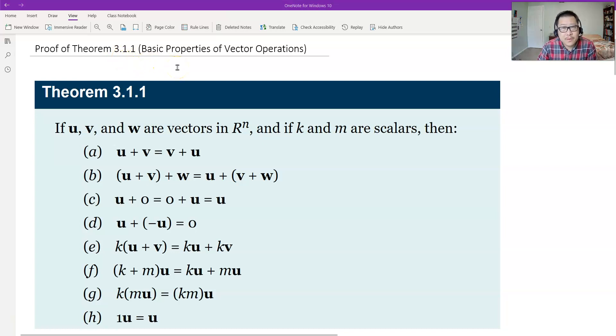The basic properties of vector operations. We have eight properties of the basic operation of addition and scalar multiplication in Euclidean n-space R^n. And this theorem is the foundation for the whole chapter 4, which is the vector space.